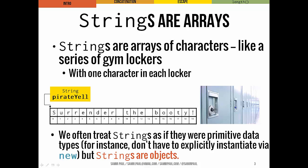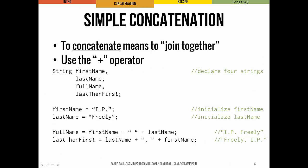We're going to work with strings a lot of the time as if they are primitive data types — at least so far we've seen that. We don't have to instantiate them explicitly using the new keyword, the new reserved word, but in reality strings are objects, and we'll learn a little bit more about what that means practically for us shortly.